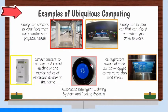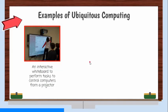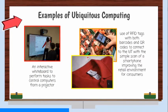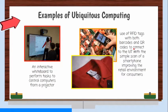Refrigerators that are aware of their suitably tagged contents and are able to plan a variety of menus. An interactive whiteboard is a large interactive display used as a whiteboard for education or business presentations. It can either be a standalone touchscreen computer used independently to perform tasks and operations, or a connectable apparatus used as a touchpad to control computers from a projector. Use of RFID tags with both barcodes and QR codes allows the consumer to connect to the Internet of Things with a simple scan of a smartphone or tablet. Making objects marked with a QR code or barcode improves the retail environment because consumers will be more educated about the item before purchasing and will be able to check for an item's availability.